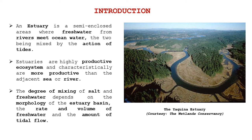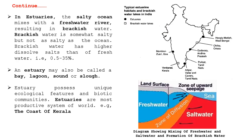The degree of mixing of salt and fresh water depends on the morphology of the estuary basin, the rate and volume of fresh water, and the amount of tidal flow. In estuaries, the salty ocean mixes with the fresh water rivers resulting in brackish water. Brackish water is somewhat salty — not as salty as the ocean — because fresh water is mixed in it. Brackish water has a higher dissolved solids content than fresh water.